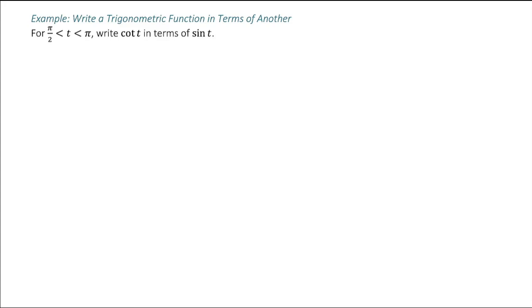For t between pi over 2 and pi, we want to write cotangent of t in terms of sine of t.